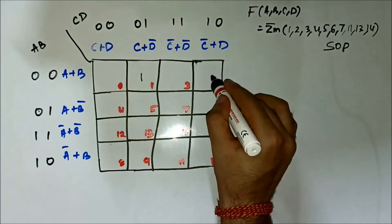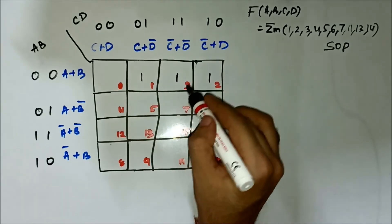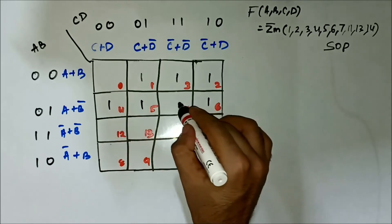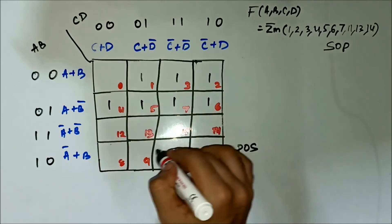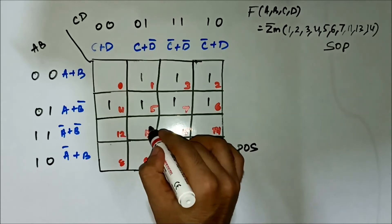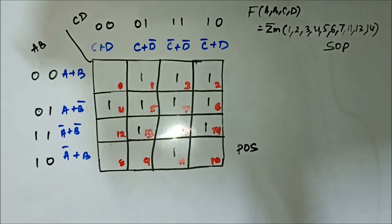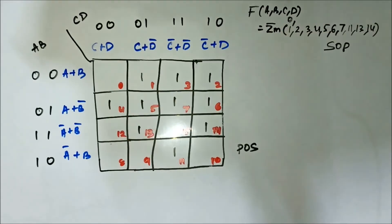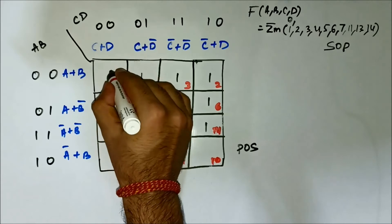Now we will be forming the groups. There is also another minterm value which is 0 — that will also be included here.